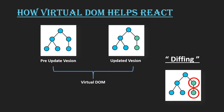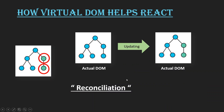After finding which elements need to be updated, React quickly updates only those specific elements in the real DOM without re-rendering anything else. It just updates the required elements efficiently. This is how React efficiently updates the DOM with the help of the virtual DOM, and the whole process is called reconciliation.